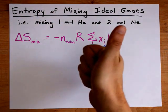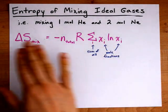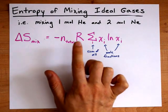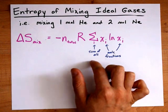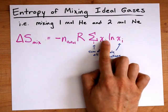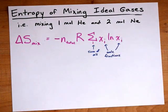and so the entropy increases. We can calculate the gain or increase in entropy with this formula: negative moles total, gas constant, and then we have this complicated math-looking expression, which just means the sum of all the products of the mole fractions times the ln's or natural logarithms of those mole fractions. Let me show you how it works.